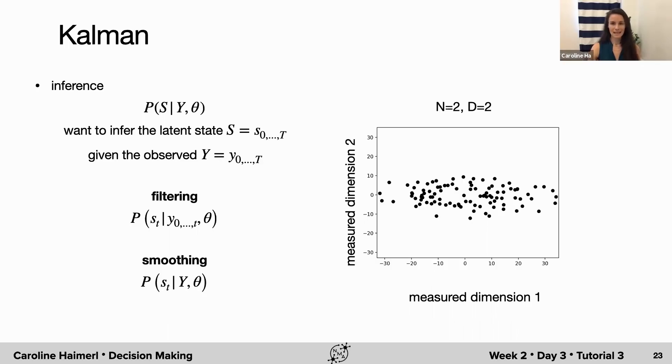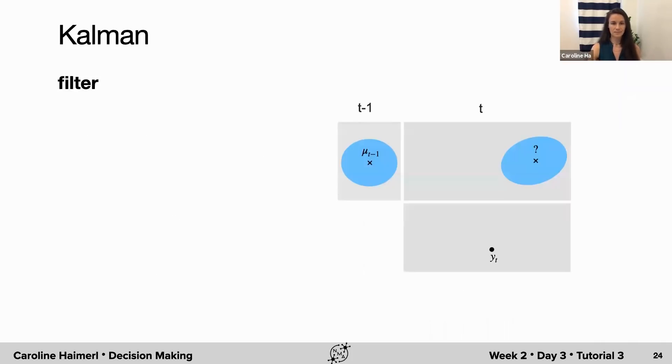Smoothing is the second step, and it's a little bit less intuitive, because here we estimate the latent given the whole data sequence, but using the results from the filtering step. This is also called the backward pass, since we are working from the last sample back to the first. Here we will focus on the filtering.